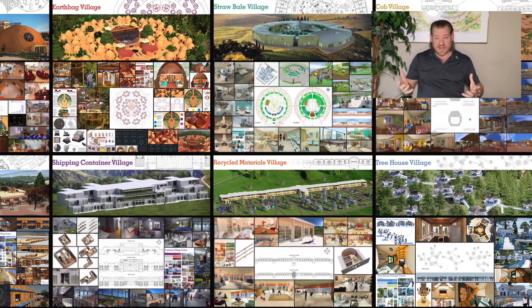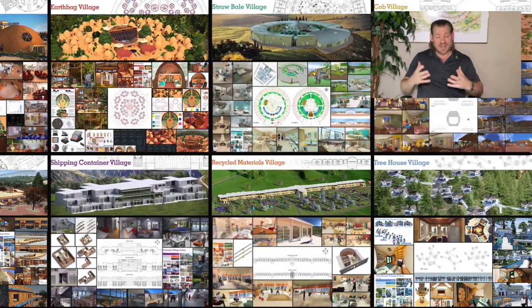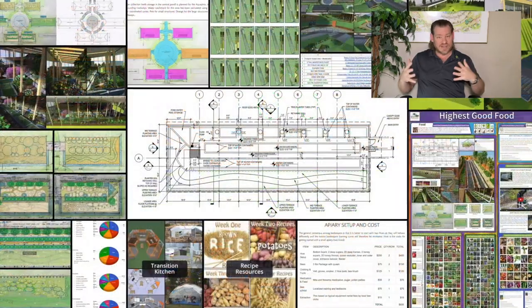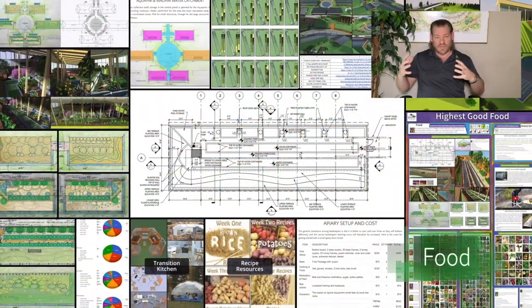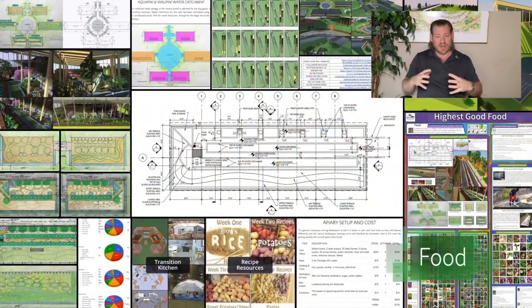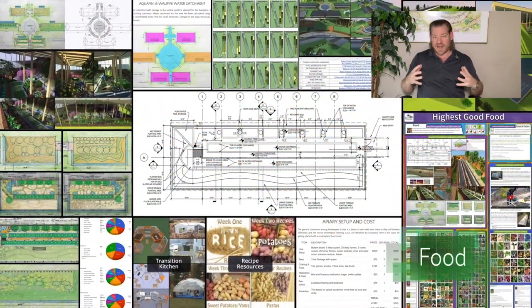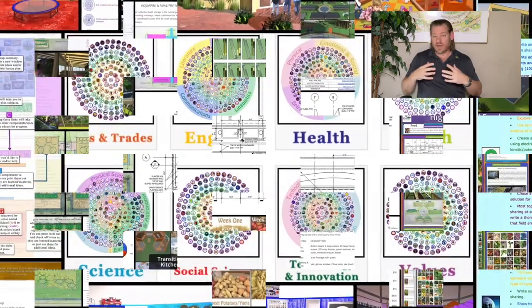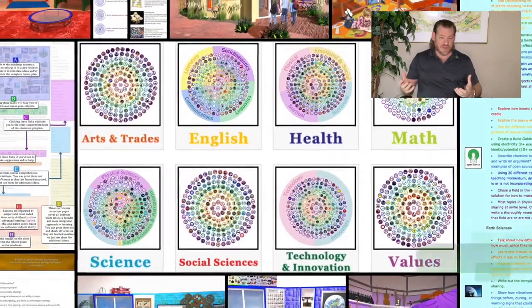What is a sustainability matrix? A sustainability matrix is a matrix — an interconnected group of parts and components — designed to work better together than they work individually.